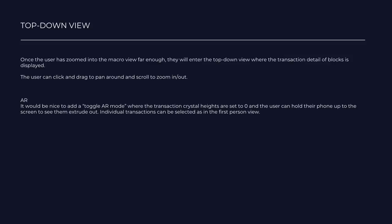In the top down view, once the user has zoomed in from the macro view they will enter the top down view where the transaction detail of blocks is displayed. The controls are like Google Maps — you can use the mouse wheel to zoom in and out and click to pan around. This view could be a good opportunity for augmented reality, as the top down view of each block is unique and would work well as an AR marker. The user could hold their phone to the screen and see the transaction crystals extrude out.